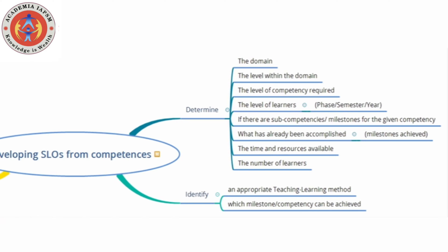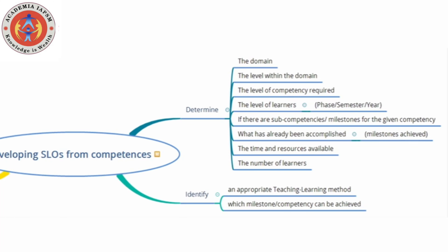If there are milestones, you need to know what has already been accomplished — which milestones have been achieved, if any. You also need to know the time as well as the resources available for your session, and you need to know the number of learners.